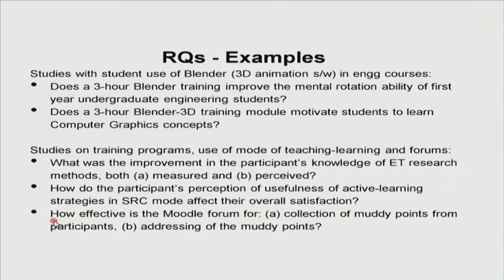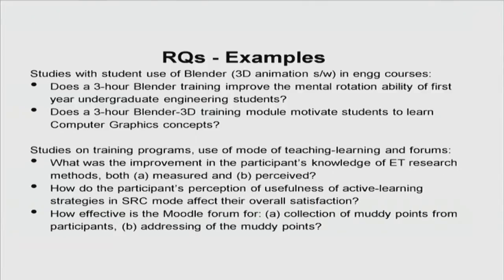Now we will do an activity called 'fastest finger first.' You have to quickly write a research question about your own ET research study. Revisit your answers to the think-pair-share activity and write one RQ — remember it should be a question and not a statement. Some answers received: 'Does use of peer instruction lead to improvement in answering in-class questions correctly?' from Don Bosco College. 'Does the use of multimedia animations enhance student performance in understanding algorithms?' from UIET Punjab University — slightly incomplete because 'enhance' needs to specify as compared to what, but still a good RQ to investigate.